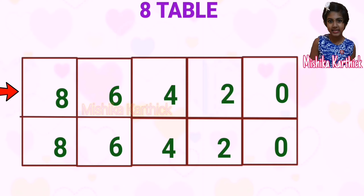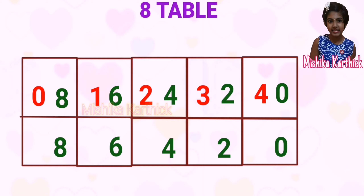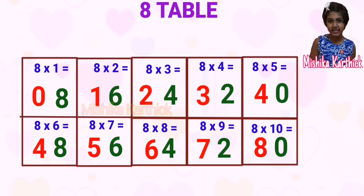Now we write the numbers 0 to 4 in the first row: 0, 1, 2, 3, 4. Next, we write the numbers 4 to 8 in the second row: 4, 5, 6, 7, 8. Now we have the 8 times table using Method 2.